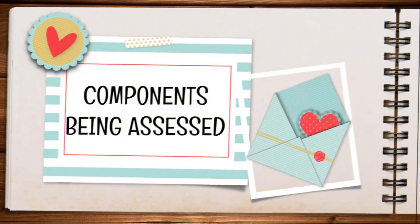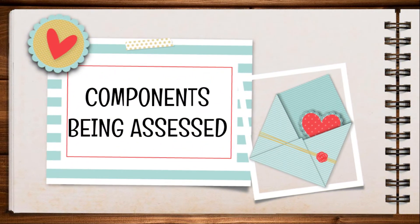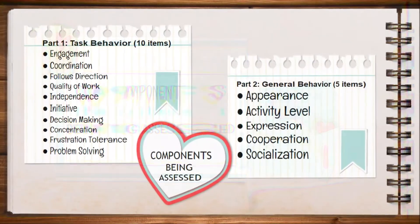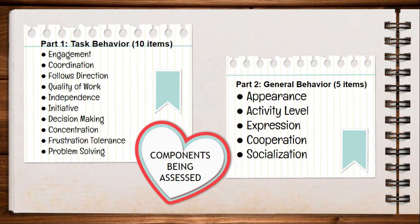Next is the components being assessed in OTOS. There are 2 parts being assessed, which are task behavior and general behavior. For task behavior, it consists of 10 items which are engagement, coordination, follow direction, quality of work, and independence.